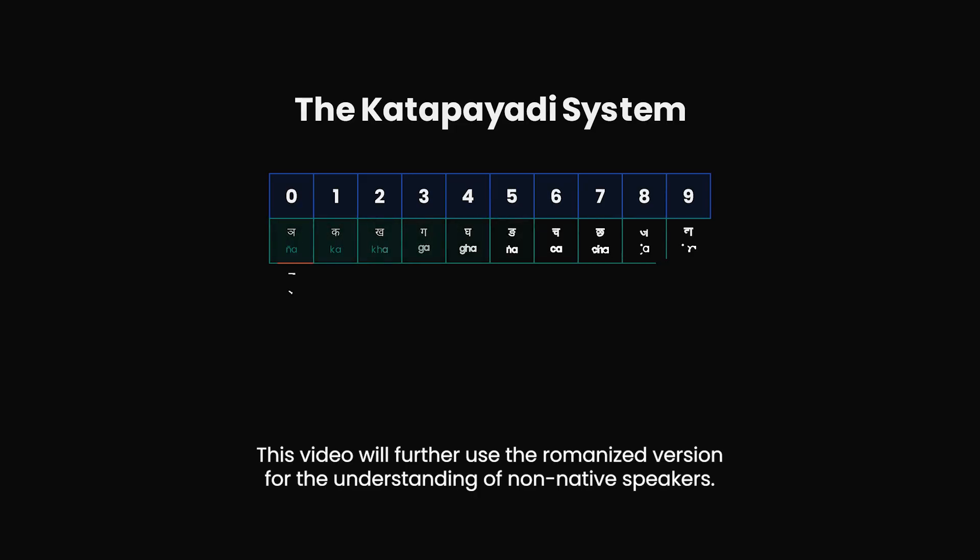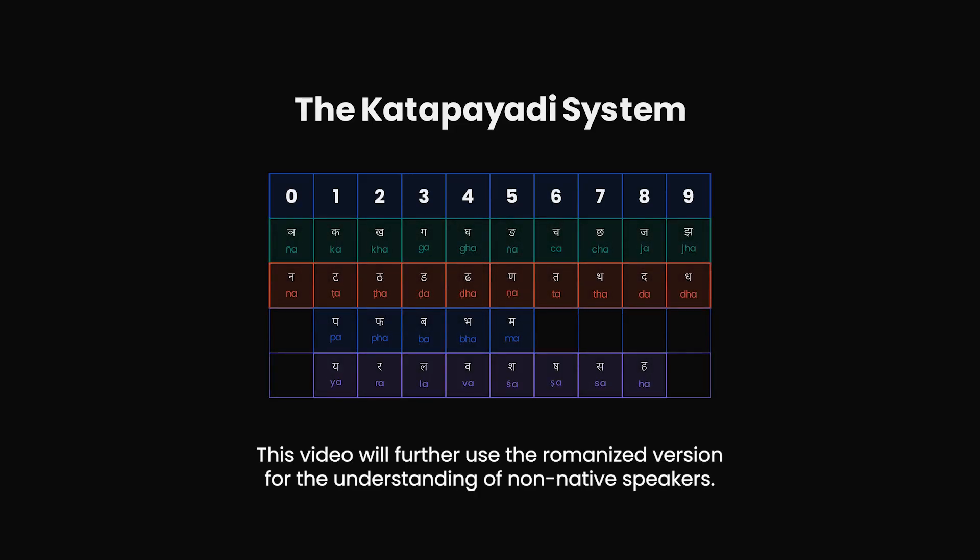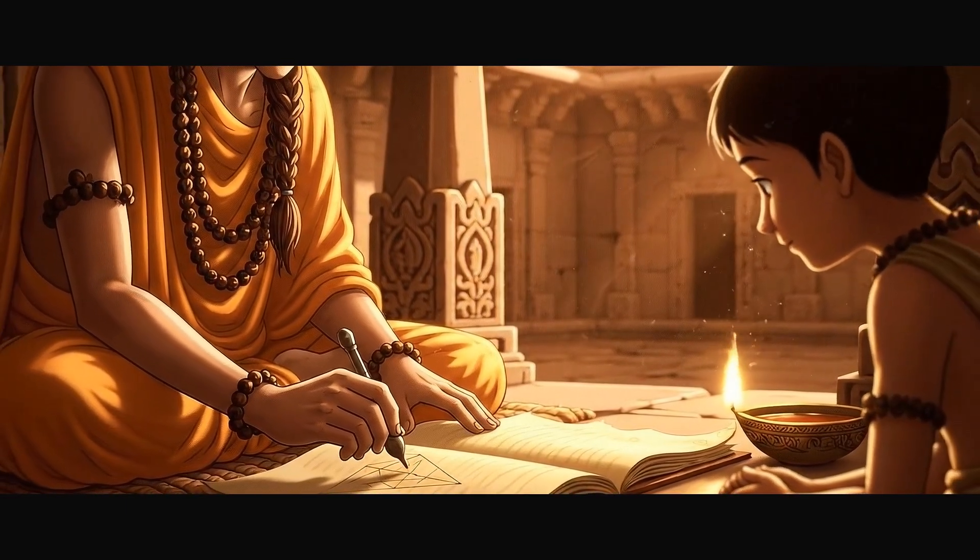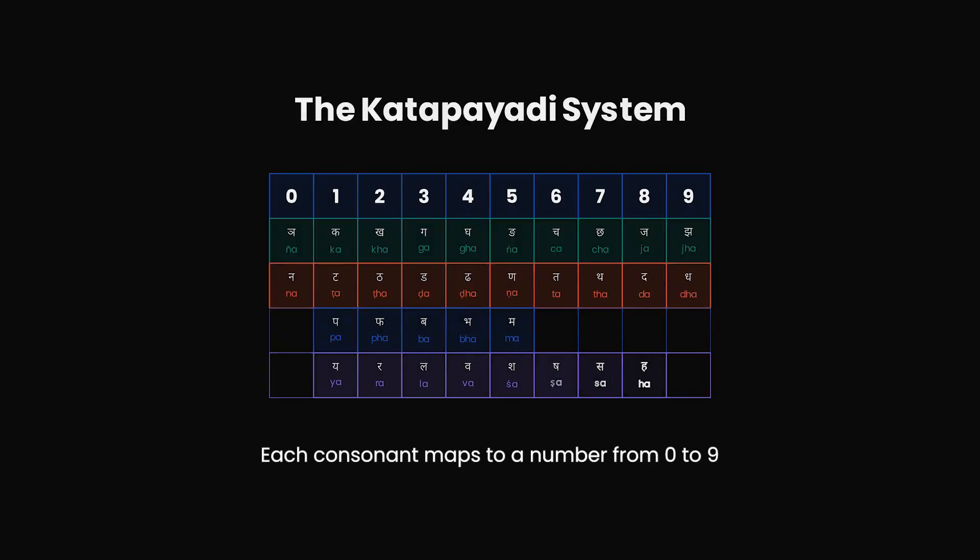A kind of mnemonic code called the Katpayadi system. Think of it as a decoder ring invented by mathematicians in India hundreds of years ago. Each consonant maps to a number from 0 to 9. Now here's the genius part. They didn't just assign one letter to each number, they assign multiple letters.